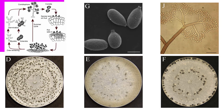Botrytis sceneria enters the cell through a special structure called an appressorium, secreting enzymes that degrade both the waxy outer layer and the cellular structure within.